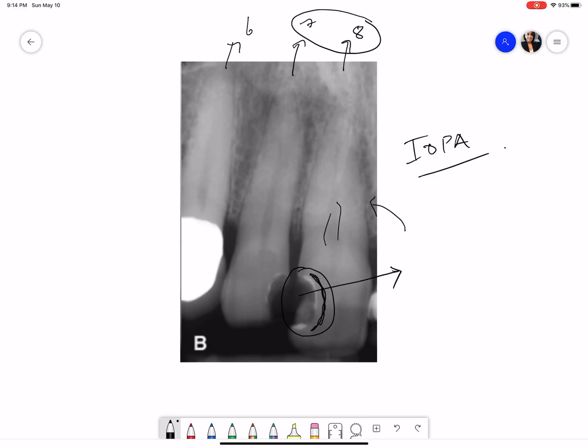The periodontal ligament space is not widened. The bone surrounding this tooth also looks normal with the trabecular pattern, there's no radiolucent area or radiopaque area in the periapical part of this tooth. Although I do see that the interradicular bone has receded, there is some horizontal bone loss in this patient between all the teeth that's radiographed in this particular area, number 7, number 8, and number 6.